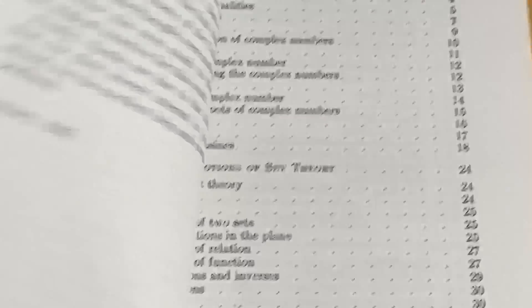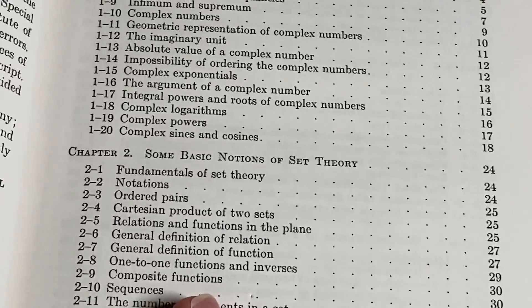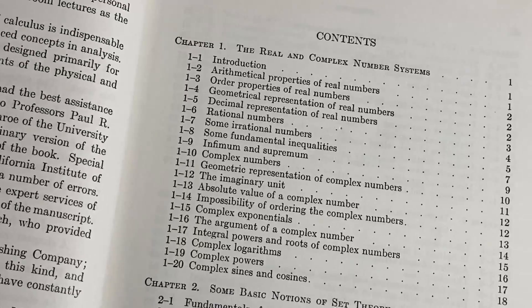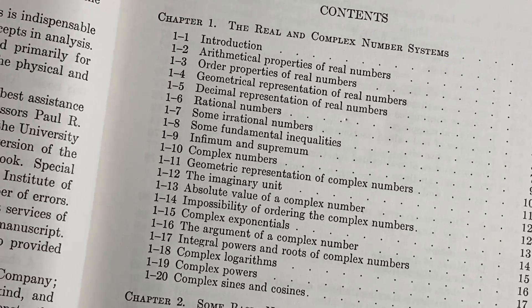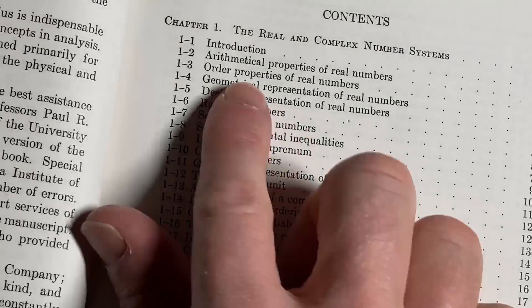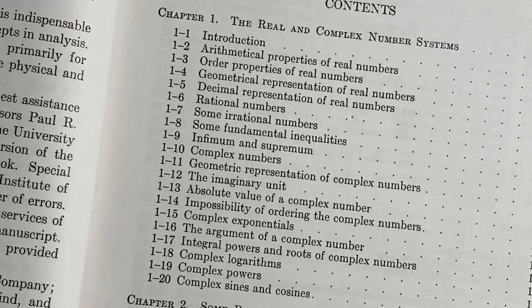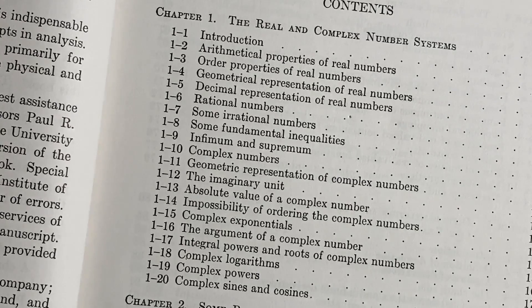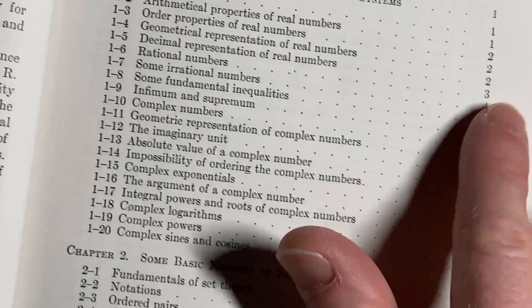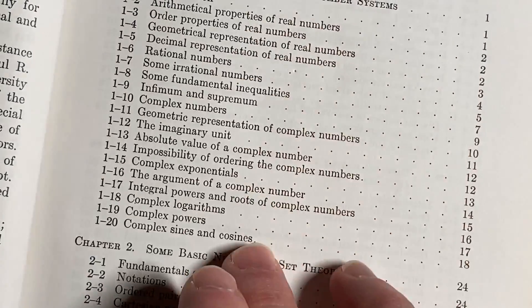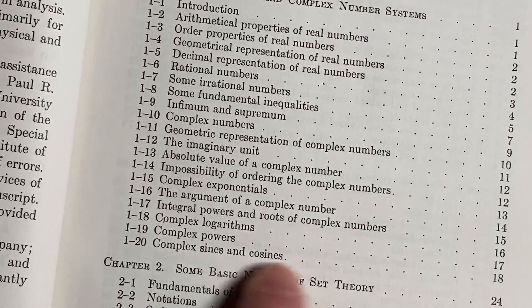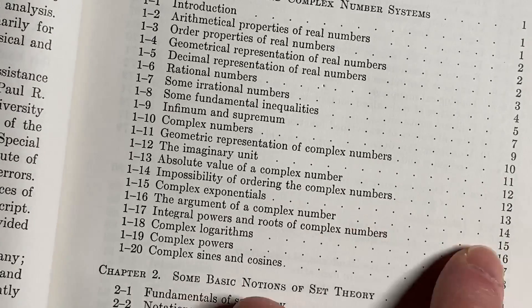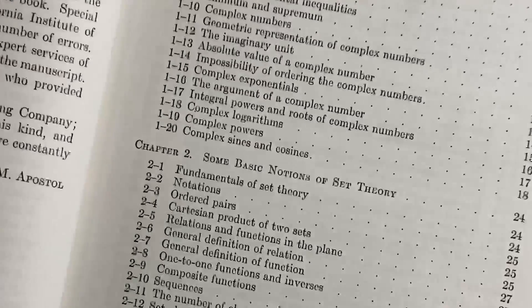And then here is the contents. Here are the contents, so you can take a look at these. Look at the contents. The real and complex number systems. Introduction, arithmetical properties of real numbers, order properties of real numbers, rational numbers, some irrational numbers, infimum and supremum, complex numbers. Look at the page numbers, so it's very dense. It has a lot of little topics, right? You learn a lot. Complex powers, complex sines and cosines, just like one page, two pages. Just complex exponentials, page 13, boom. The argument, 15. I mean, just goes quickly. We'll take a look at all of that in a minute.